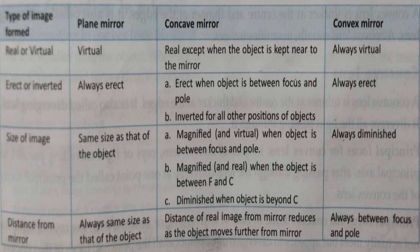Next point: the distance from the mirror. In a plane mirror, it is always the same size as that of the object. In a concave mirror, the distance of the real image from the mirror reduces as the object moves further from the mirror. And in a convex mirror, it is always between focus and pole.